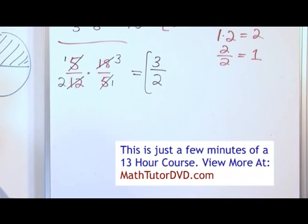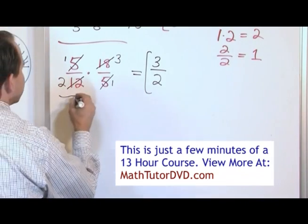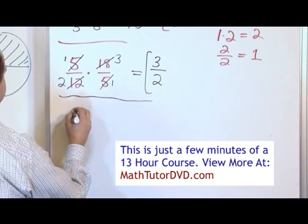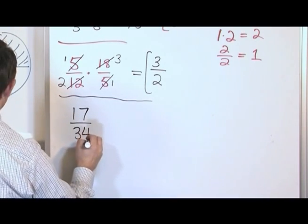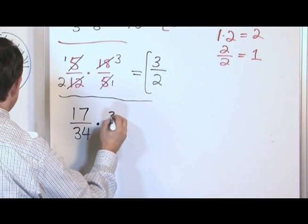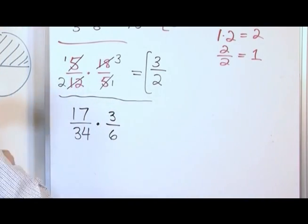So what we're going to do is just keep on working a lot of problems here. If this idea is a little foreign to you, don't worry about it because we're going to do a lot of these things and it will become very clear. What if I had 17 thirty-fourths multiplied by 3 sixths? So I'm going to do that.